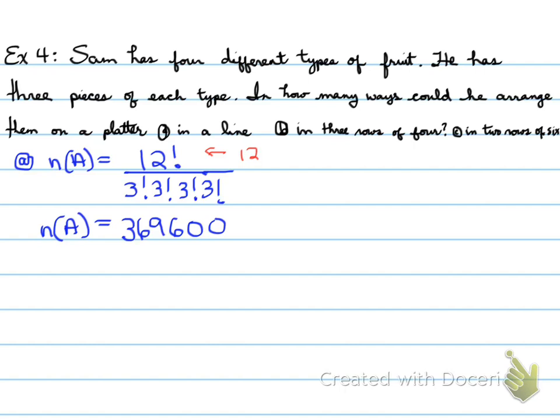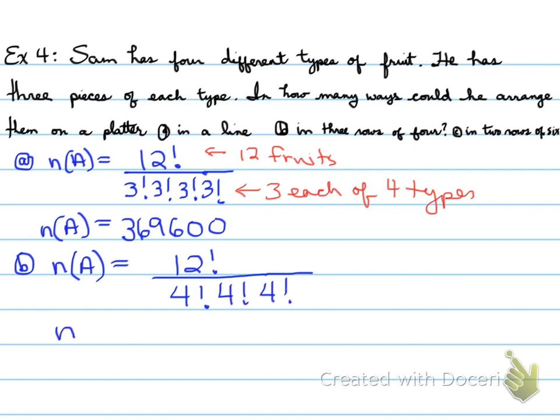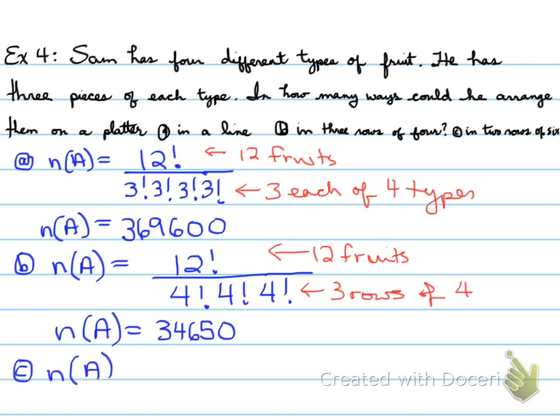Divided by 3 factorial times 3 factorial times 3 factorial times 3 factorial. The answer to that is 369,600. So there are 12 fruits and 3 each on the bottom, 3 each of four types. Second part, I need to know in three rows of four. So 12 factorial over 4 factorial times 4 factorial times 4 factorial. Because again, we have three rows of 4, so 4 in each row, so we're dividing by that. Now, that will give us, so again, 12 fruits, three rows of 4. In the third one, in two rows of 6, means that we're dividing by 6 factorial times 6 factorial, because there are 12 fruits and two rows of 6 on the bottom.